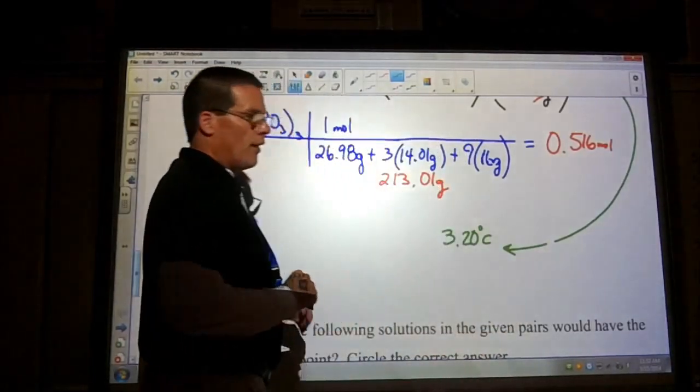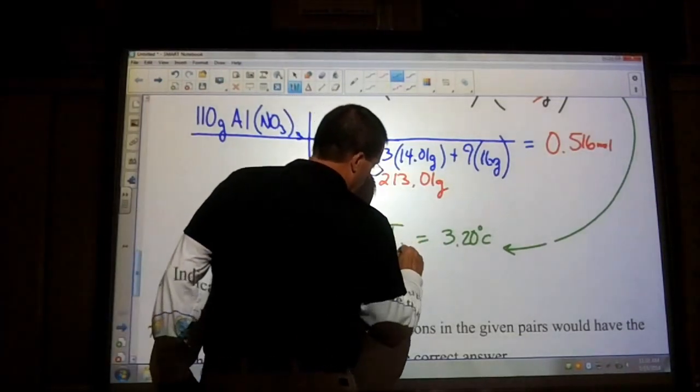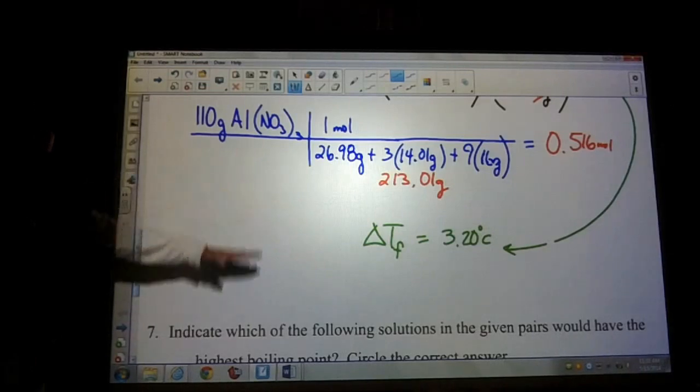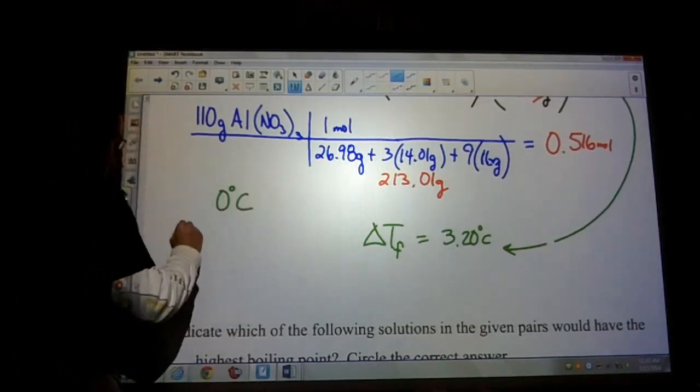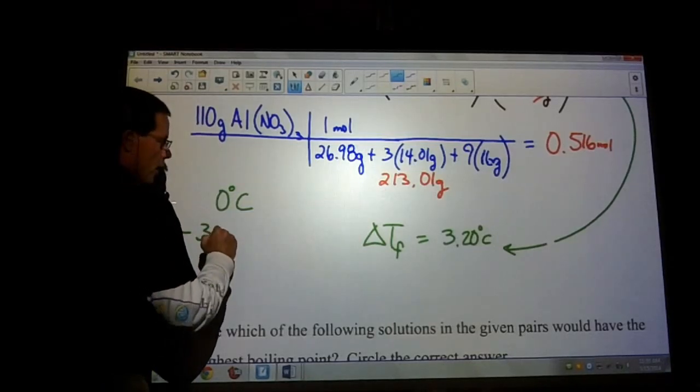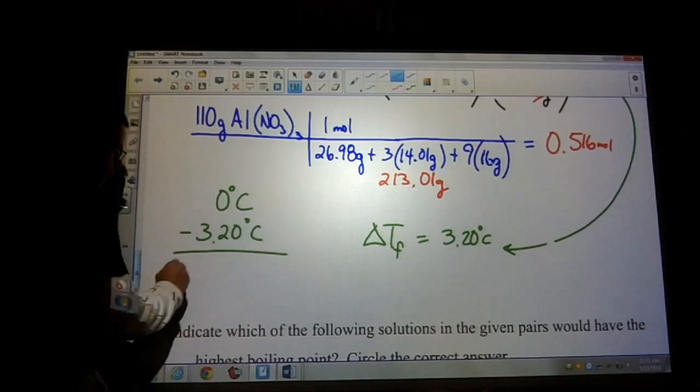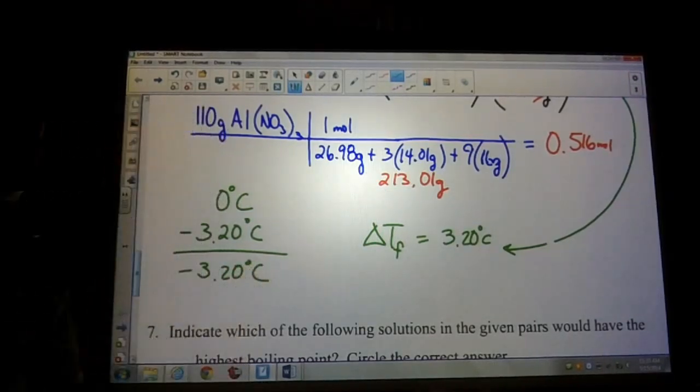So since this is a freezing point depression, this equals your delta T sub F. So that means that we're starting at zero and we're dropping down. So start at zero, and our change is lowering the freezing point. So we want to subtract that from zero.